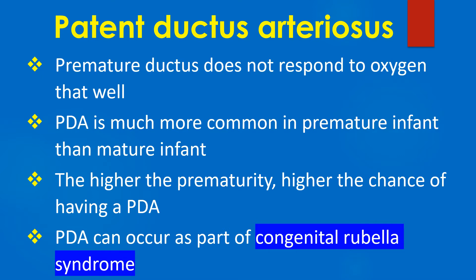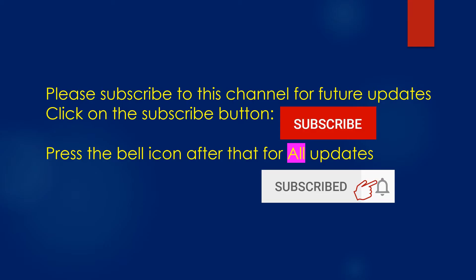PDA is much more common in the premature infant than the mature infant. The higher the prematurity, the higher the chance of having a PDA. PDA can also occur as part of the congenital rubella syndrome.